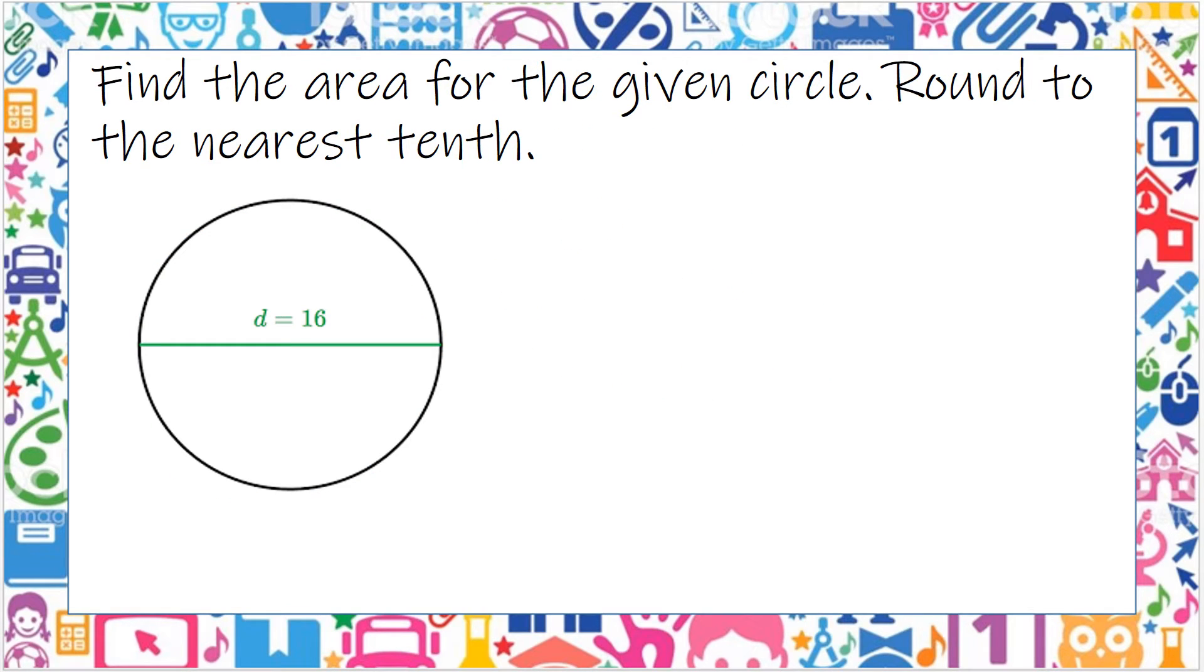Find the area of the given circle, round to the nearest tenth. So the area of a circle is pi r squared. Because we need our radius, we have to cut the diameter in half. So the radius is equal to 8. 16 divided by 2 is 8.